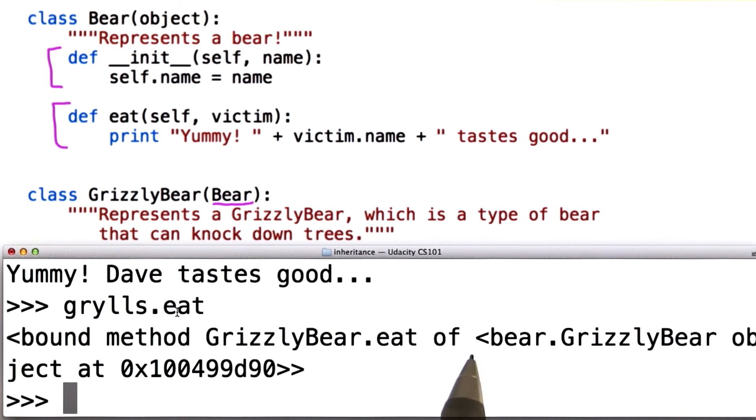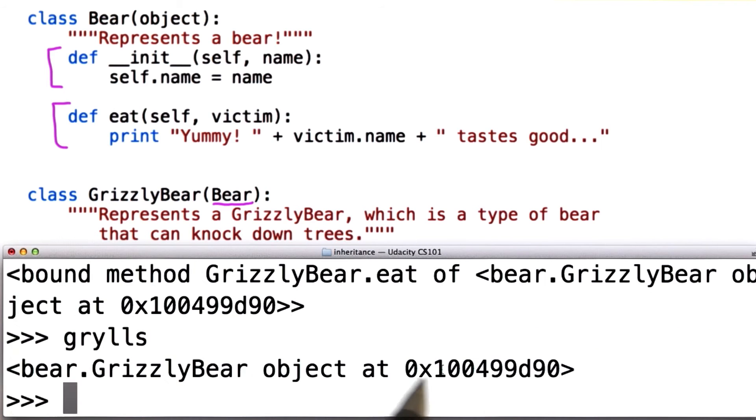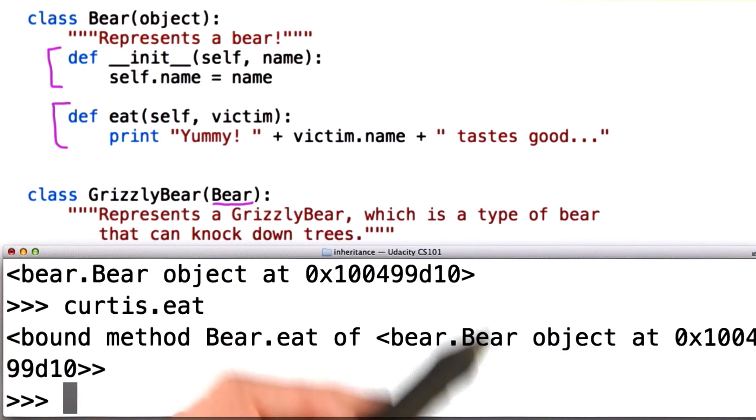So it says that the bound method of the grizzly bear object, and the grizzly bear object is this one. The bear object also has an eat method, and it's of the bear object. Note that this is an attribute, so we can assign it.